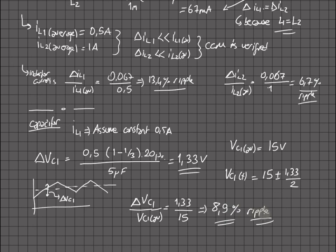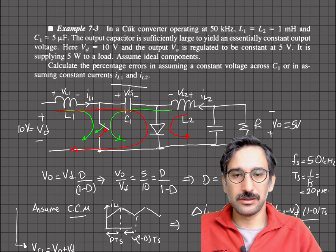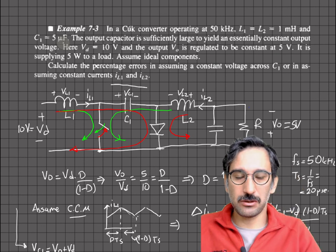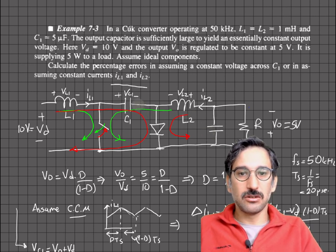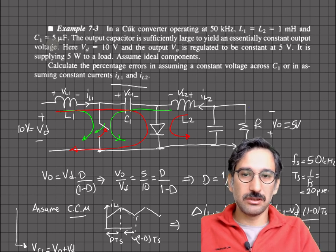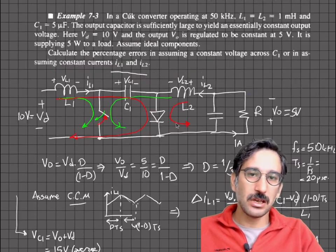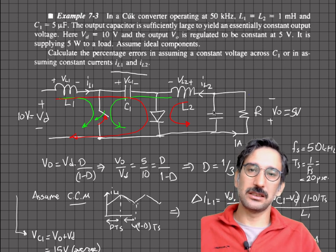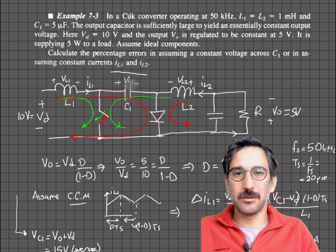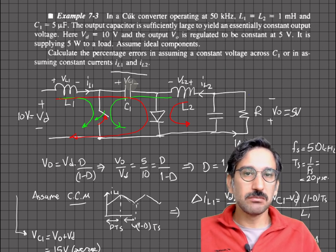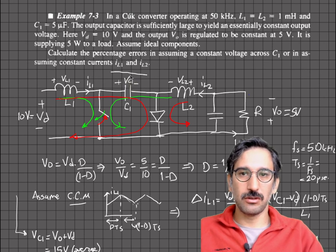If you choose a smaller capacitor — say 1 microfarad instead of 5 microfarad — you get a much larger voltage variation which would affect the output voltage. Choosing 50 microfarad would reduce the ripple to about 0.8%, giving a more stable output, but increasing size and cost. Choosing inductance and capacitor values must be done properly and verified analytically or by computer simulation.